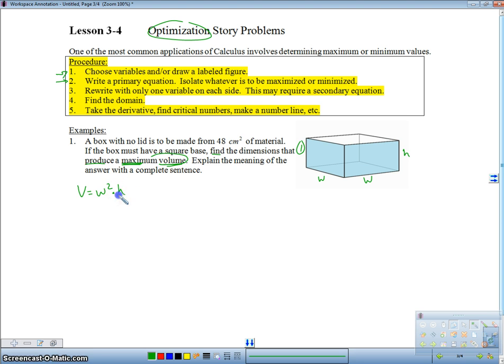Now, in related rates, we were able to leave some of these things in an implicit form because we were going to take implicit differentiation. That's not true in optimization. In optimization, we need this to be an explicit equation. We need to have one variable. So you want to have one variable on each side. You may need a secondary equation to do that. So I need one variable here. And notice we have some additional information. This thing is going to be made with 48 centimeters squared. So that is the amount of area that I'm going to make my box with.